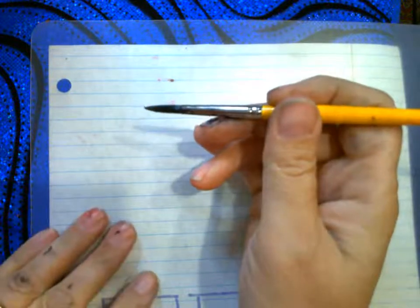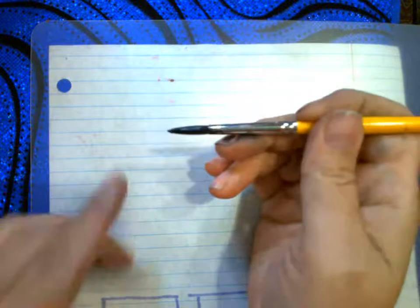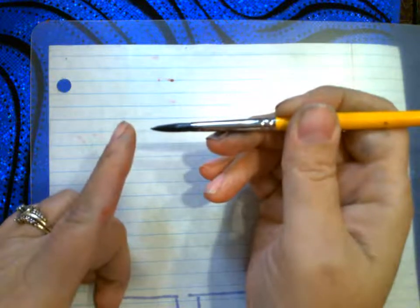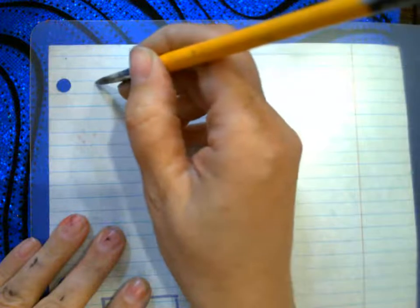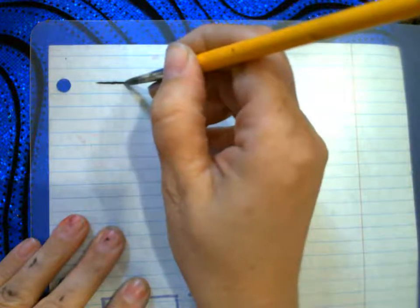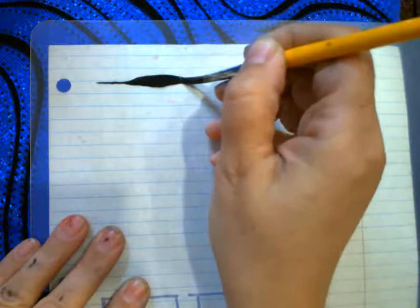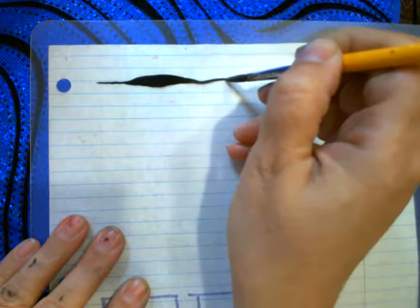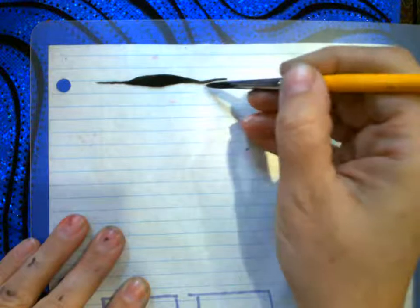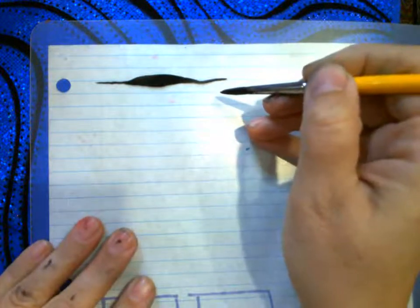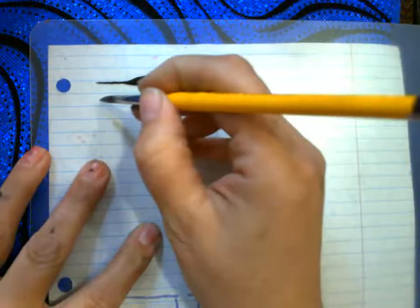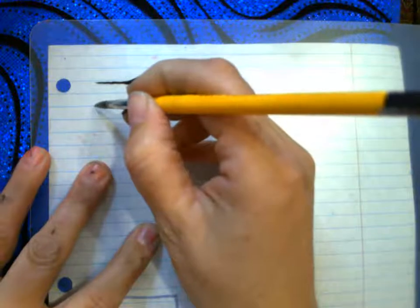Just like we practiced doing the reverse teardrops by dancing our brush on its tippy toe, the zebra stripe is as easy as drawing with the tippy toe and then laying the brush down and then picking it up. It's okay if there's a little wave in there. Zebra stripes are not all perfectly straight, but just practice.